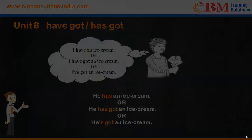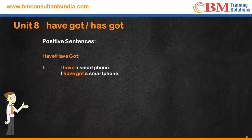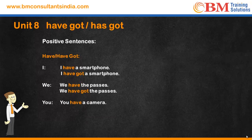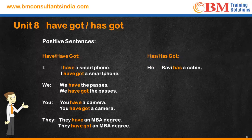Let's look at positive sentences with 'have' or 'have got.' 'I have a smartphone' — you can also say 'I have got a smartphone.' 'We have the passes' — you can also say 'We have got the passes.' 'You have a camera' is equal to 'You have got a camera.' 'They have an MBA degree' can also be said as 'They have got an MBA degree.'